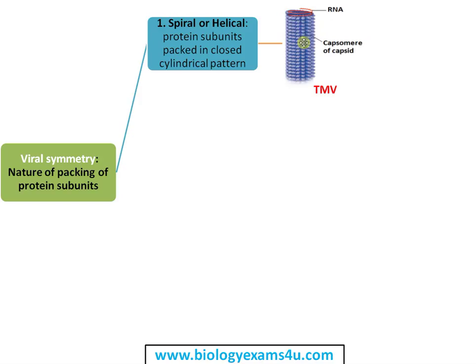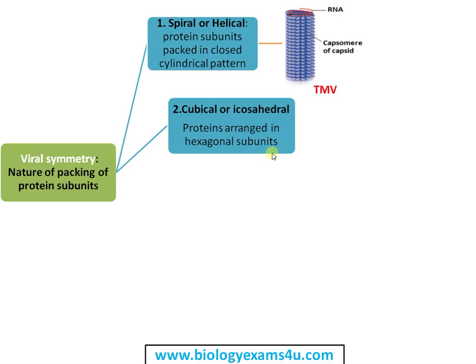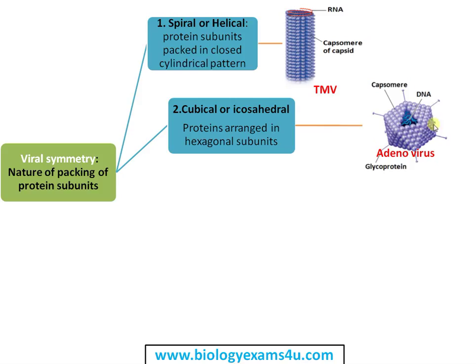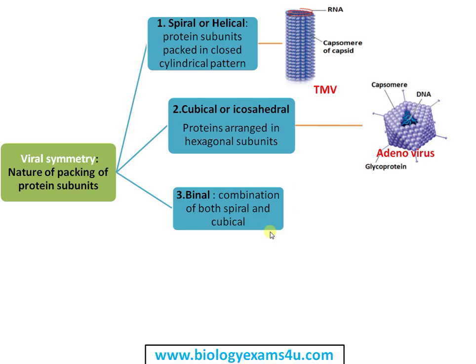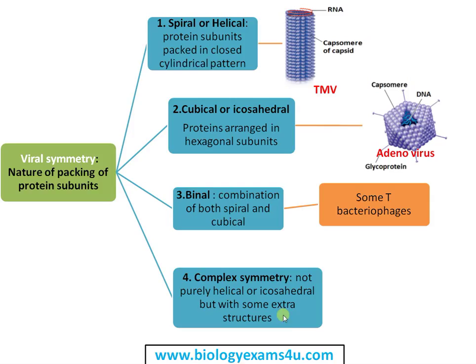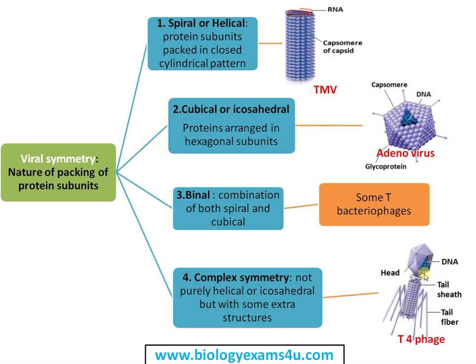Then there is cubical or icosahedral symmetry, where proteins or capsids are arranged in hexagonal subunits — may be five-sided or six-sided. This is adenovirus; you can see the capsid has six-sided hexagonal units. Then there is binary symmetry, which is a combination of both spiral and cubical symmetry, seen in some T-phages. Finally, complex symmetry cannot be considered purely helical or purely icosahedral, but has some extra structures. This is the case with bacteriophages — the head region is icosahedral, the tail region is somewhat helical, and there are other structures like the collar, tail, and tail fibers. That is why the symmetry is called complex symmetry.